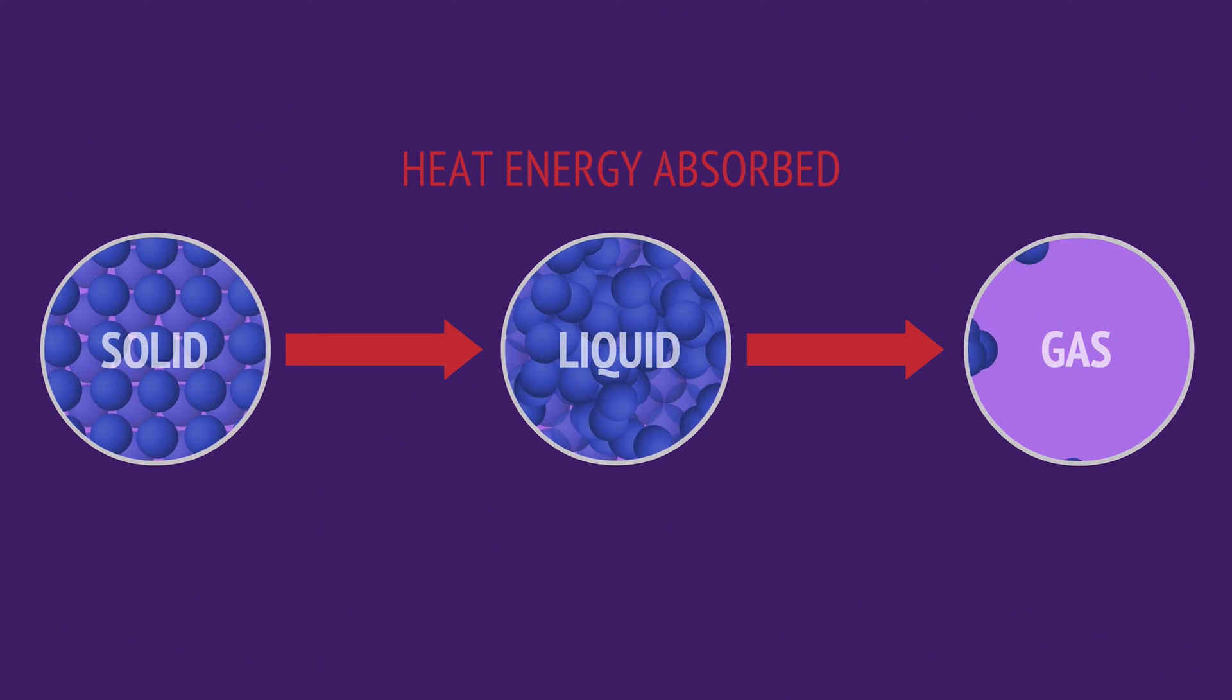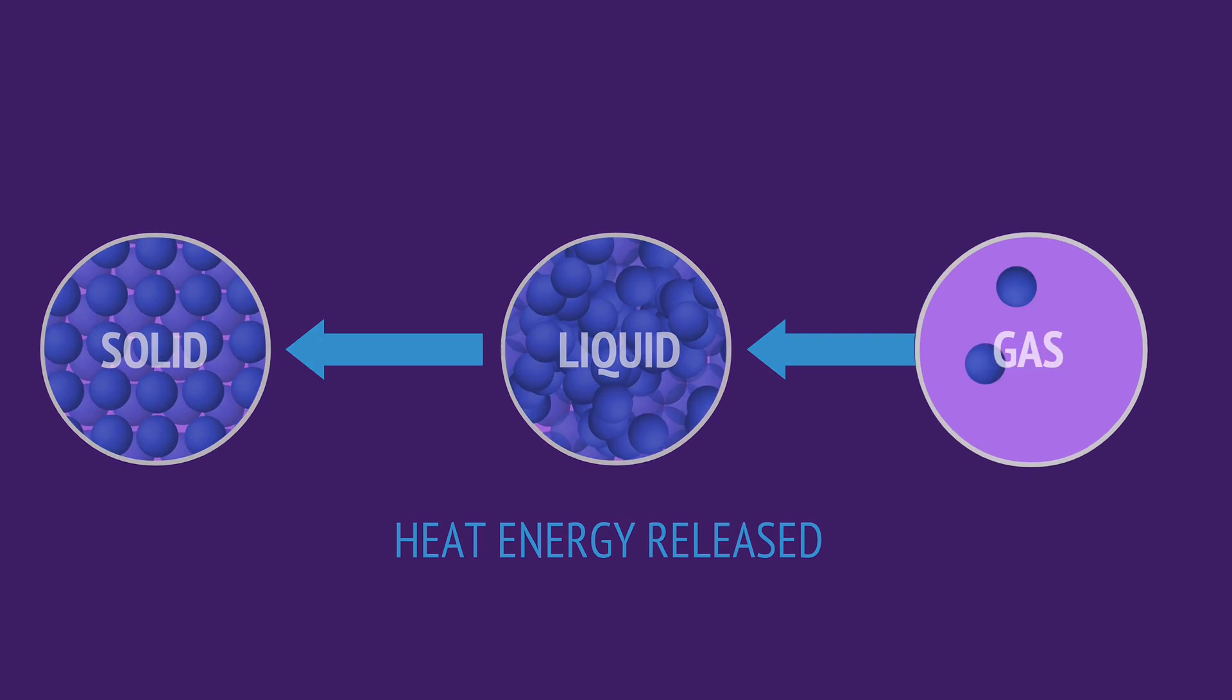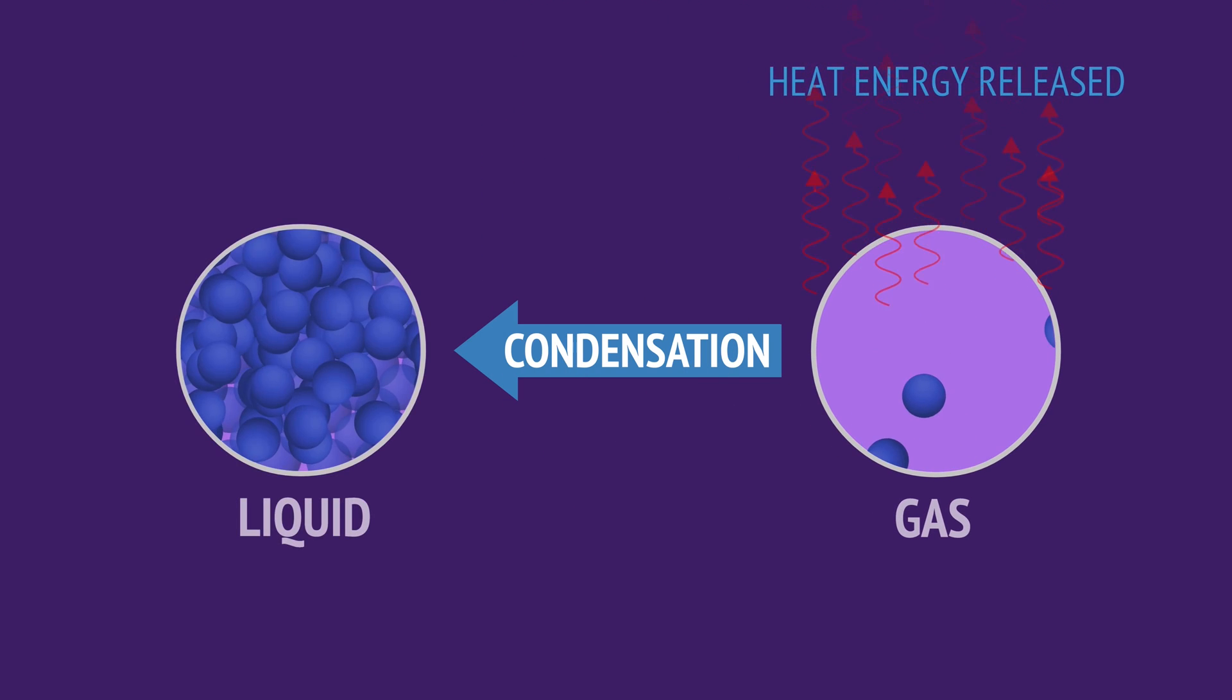The processes of melting or vaporization are reversed when a substance releases sufficient heat energy. As a gas cools, the particles move about more and more slowly. Eventually, they'll slow down enough to get attracted to other particles and form a liquid, a process we call condensation.